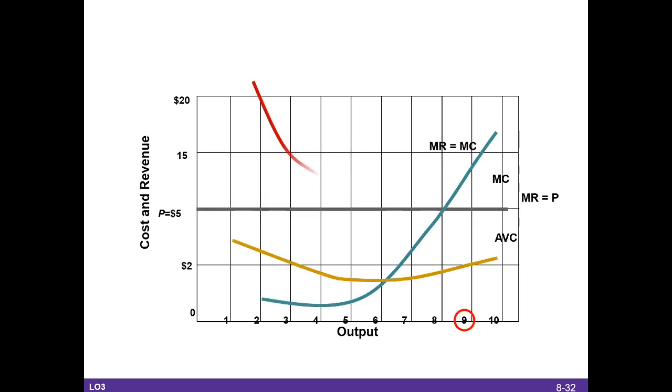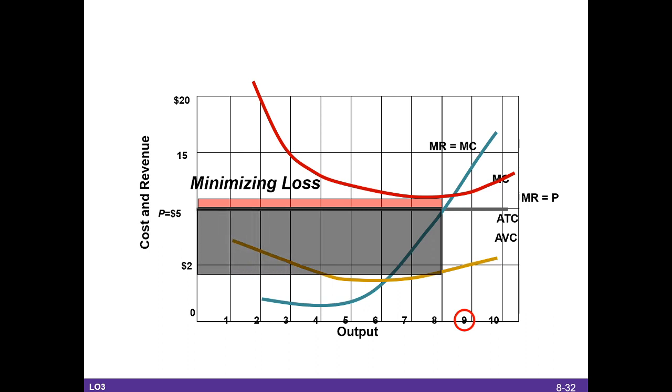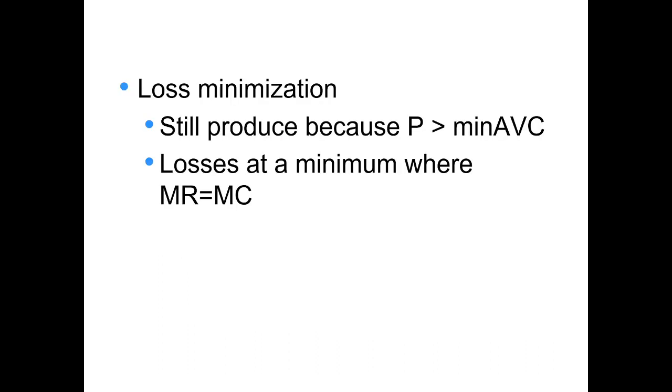And we'll just look at it one more time showing the areas. And we call this loss minimization. Still produced because price is greater than the minimum AVC. And we still go, nothing changes. We still go to where MR is equal to MC.